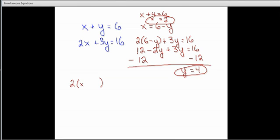So we would say 2 times x plus y equals 2 times 6, and that is going to give us a new equation with the same values for both x and y of 2x plus 2y equals 12. Now we can subtract the original second equation from the first one.